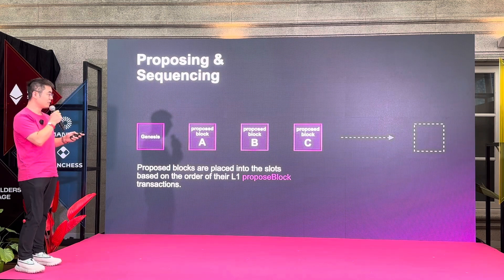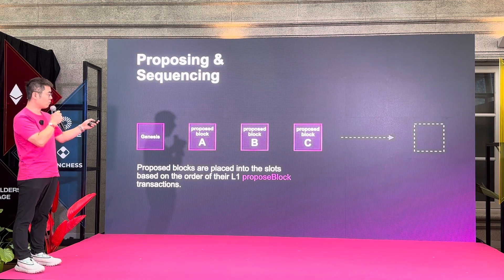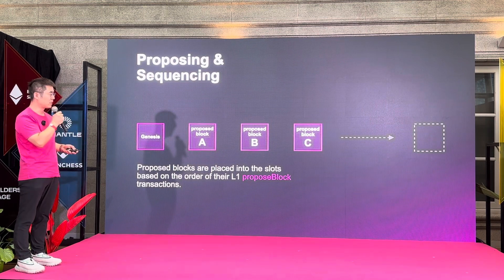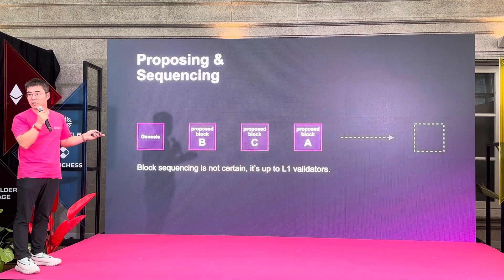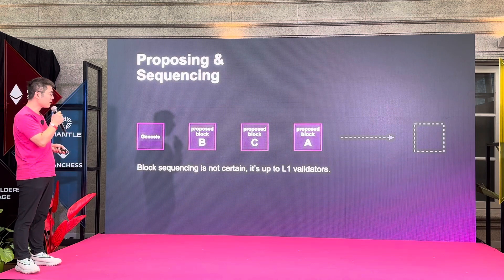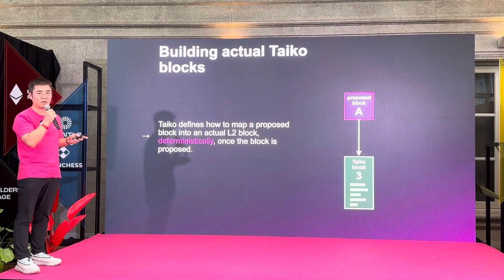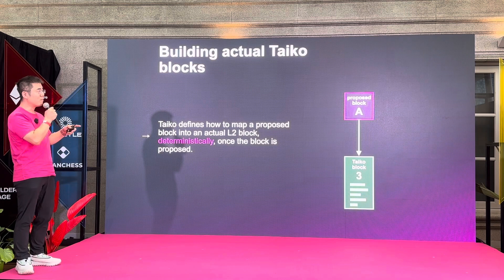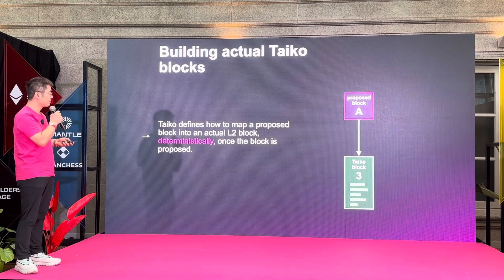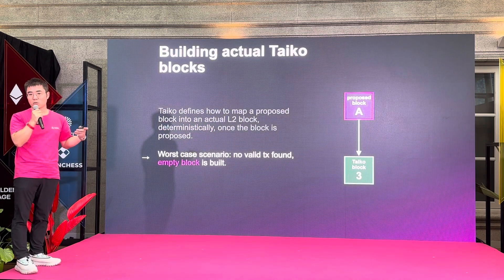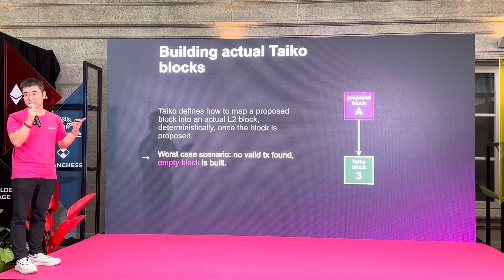Our smart contract on layer one — we call it the protocol smart contract — maintains a ring buffer or a queue of slots. When people propose slots of blocks, those blocks will be put into those slots. But it's really up to the L1 validators to decide which slot to use. In this example, blocks A, B, C are the first, second, and third block, but if these blocks are proposed almost at the same time, we don't know — maybe they're organized differently. This mapping is deterministic once the location or index of the proposed block is set on layer one.